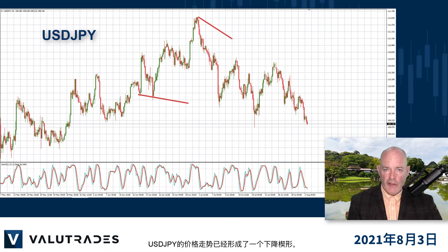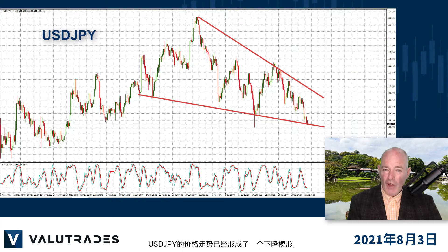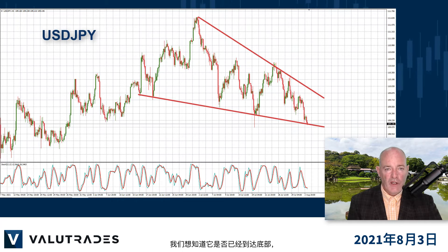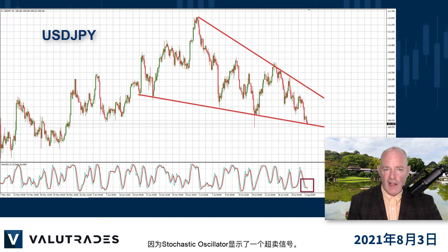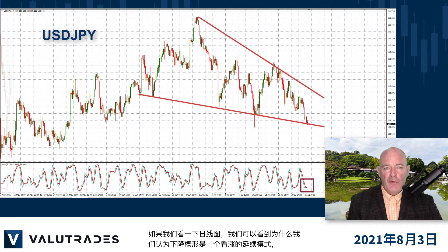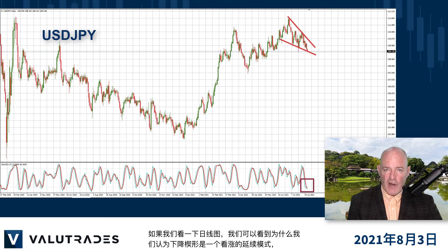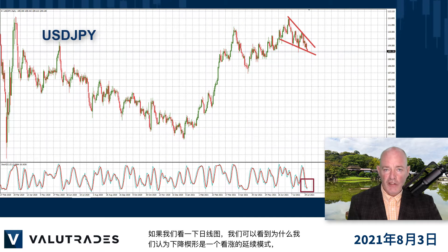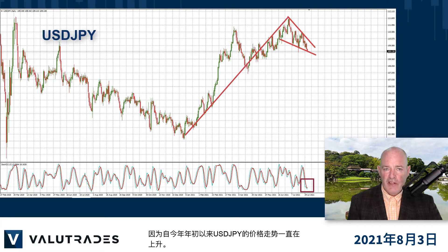Price action on Dollar Yen has formed a falling wedge and we are wondering if it has reached the bottom, as the stochastic oscillator is showing us an oversold signal. If we look at the daily chart we can see why we consider the falling wedge as a bullish continuation pattern, as price action has been rising on Dollar Yen since the beginning of the year.